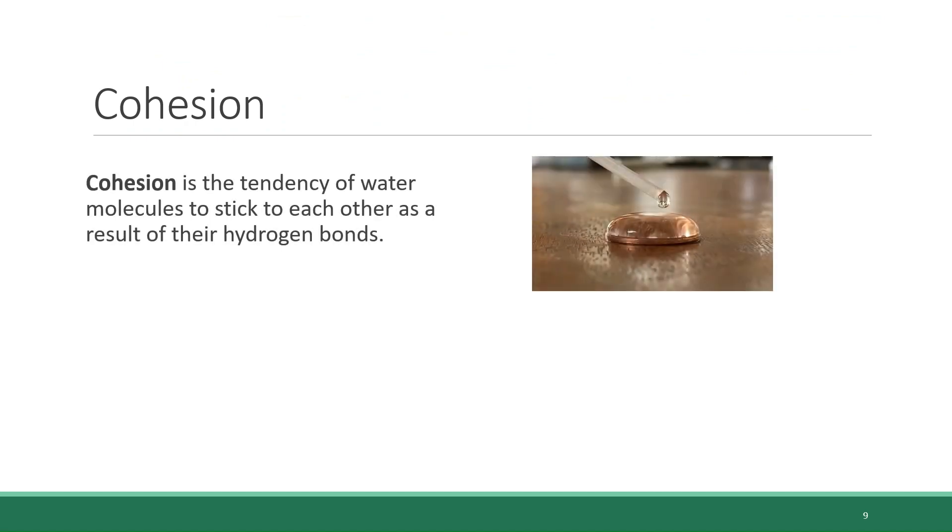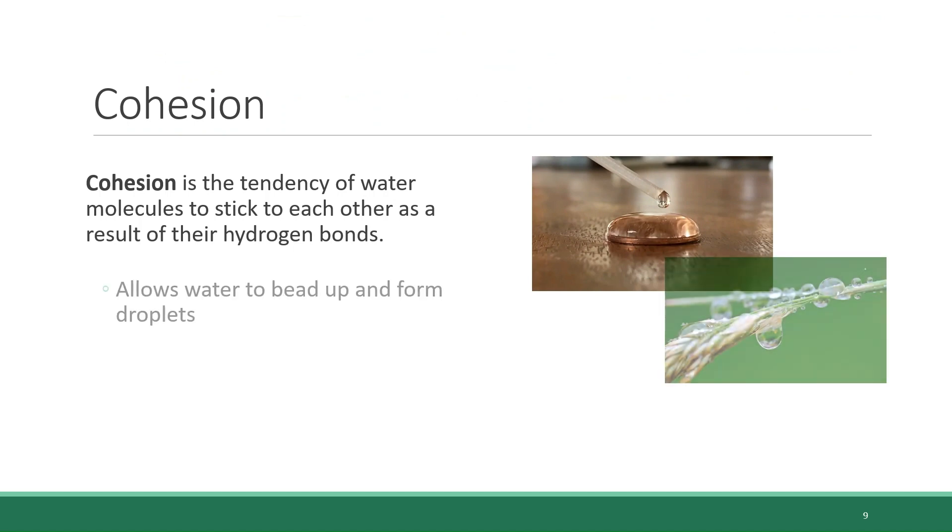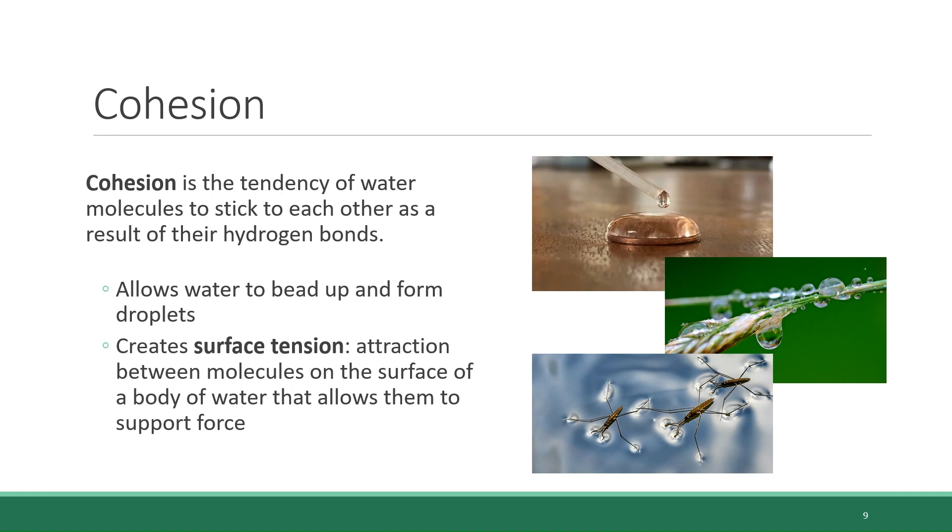These hydrogen bonds bring about certain water properties as a chemical, one of which is called cohesion. Cohesion is the tendency of water molecules to stick to each other. The example we cited previously of where you can see this in action is when you drop water onto the surface of a penny, and the dome shape forms rather than the water simply running off. So cohesion is responsible for water's ability to bead up and form droplets.